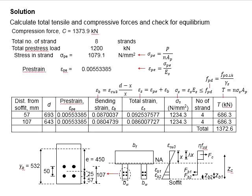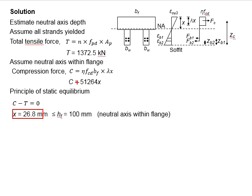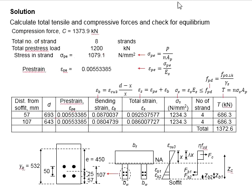Next, you will need to calculate the total tensile and compression force and check for equilibrium. Multiply the x value back into the equation. You will get the total compression force equals to 1373.9 kN. You will need to further calculate the tensile force within the tendon.